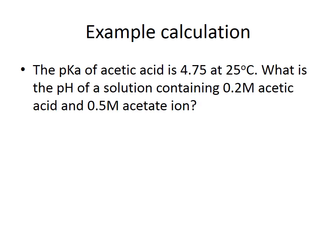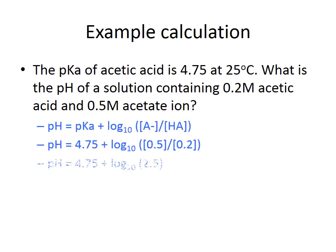An example of a Henderson-Hasselbalch calculation: the pKa of acetic acid is 4.75 at 25°C. What is the pH of a solution containing 0.2 molar acetic acid and 0.5 molar acetate ions? Applying the equation: pH = 4.75 + log(0.5 / 0.2) = 4.75 + log(2.5) = 4.75 + 0.398. Therefore the pH of this acetic acid solution is 5.148.